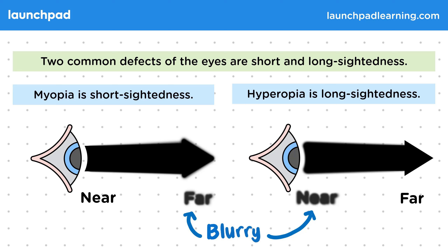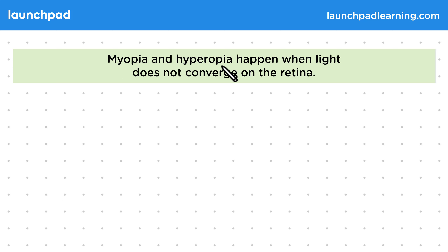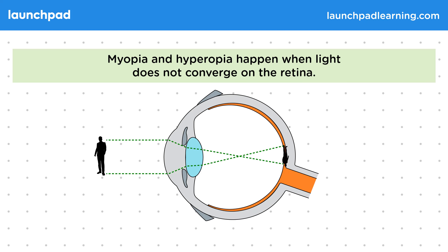What is it that causes near and far-sightedness? Myopia and hyperopia happen when light does not converge on the retina. Remember that converge means to meet at a point.